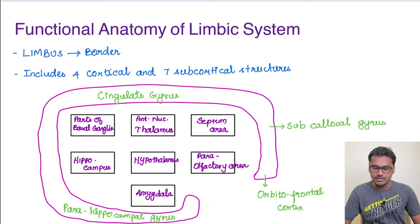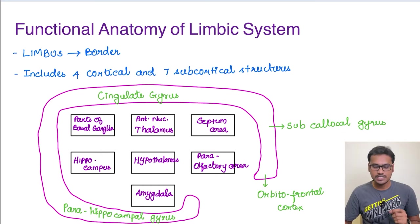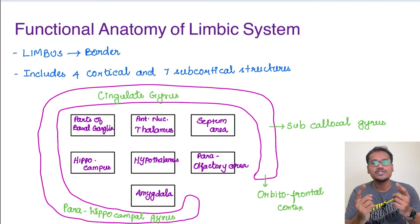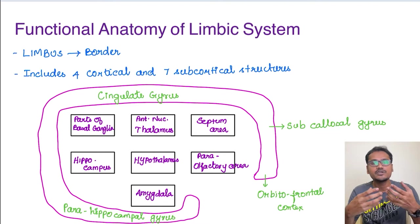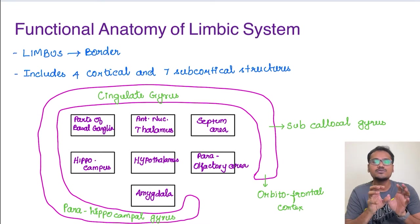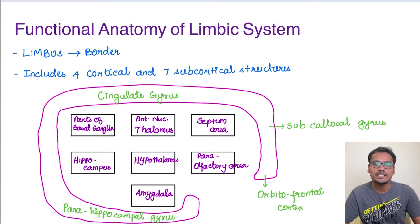Coming to the anatomy of the limbic system — what does the term 'limbus' mean? The term limbus means border. Initially, when the limbic system was identified, there was a connection between organs located at the border. But later on, they understood that the circuit is more complicated, and whatever is involved in emotion and behavior was termed the limbic system. Nowadays we refer to multiple other areas which are not exactly at the border also.